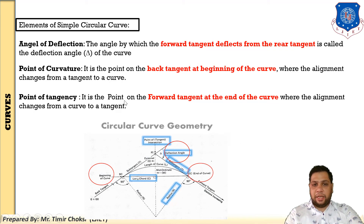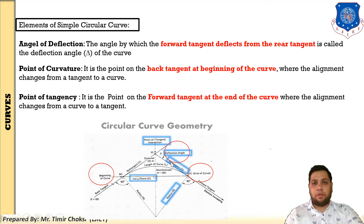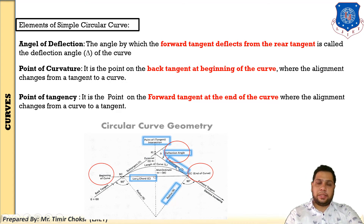Seventh, point of tangency: it is the point on the forward tangent at the end of the curve where the alignment changes from curve to tangent. EC denotes this point. When the curve ends and the straight line begins — the alignment changes back to a straight line — this point is called the point of tangency. So the point of curvature is where the tangent transitions to the curve, and the point of tangency is where the curve ends and the straight tangent begins.